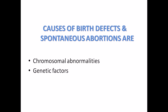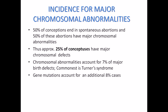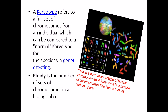The causes of birth defects and spontaneous abortions seen in the US and other parts of the world are due to two major reasons: chromosomal abnormalities — such as deletion or addition of chromosomes and swapping of chromosomal parts — and genetic factors. Looking at the incidence of major chromosomal abnormalities, 50% of spontaneous abortions are from major chromosomal abnormalities, and approximately 25% of all conceptions have major chromosomal defects.